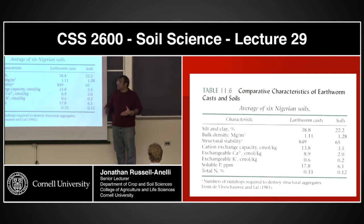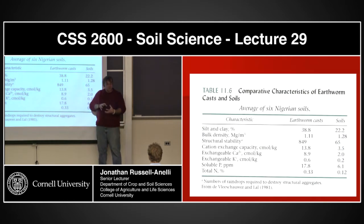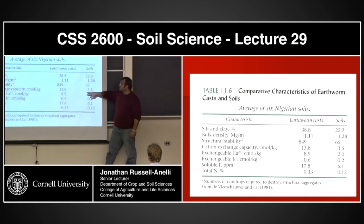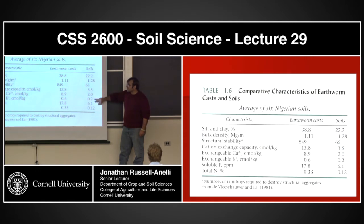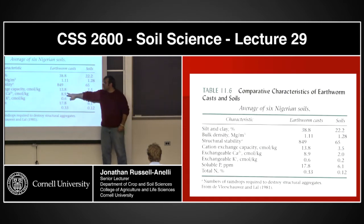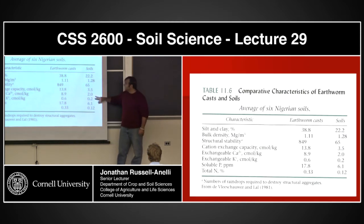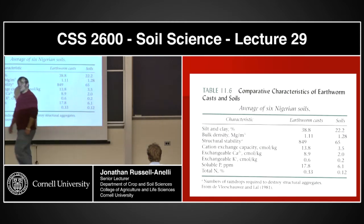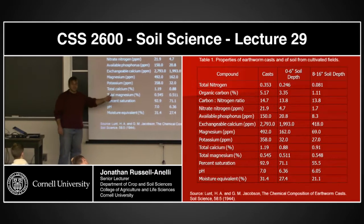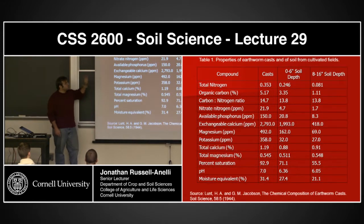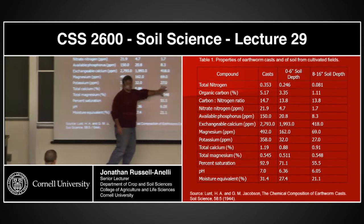With earthworms, you certainly have more infiltration, but these aggregates also tend to stay together. Cation exchange capacity — from about 13-14 down to 3.5 in the native soil. Exchangeable calcium, potassium, soluble phosphorus, and total nitrogen — notice that in each case we're looking at more nutrients in the cast than in the native soil. This is basically showing the amount of nutrients in the cast versus the surface of the soil versus at depth.